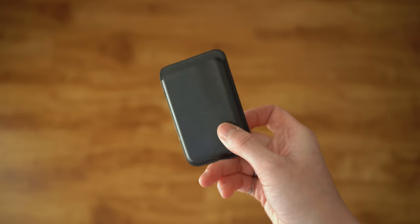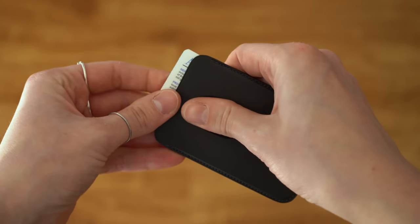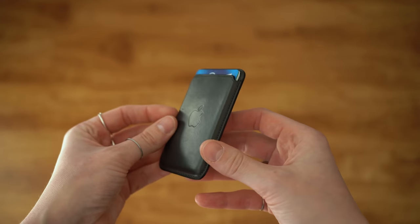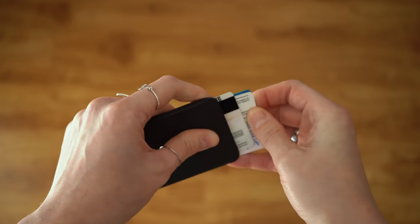I always carry my driver's license, my health insurance card, and some kind of payment card. When I first got the wallet, it was a bit tight to fit three cards, but now it fits perfectly. You do need to take the wallet off of your phone in order to use the thumb key on the back to get the cards out.